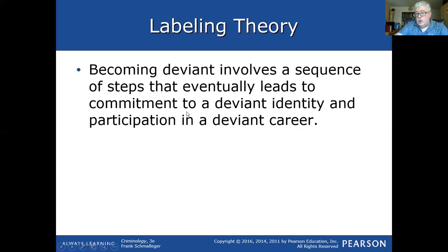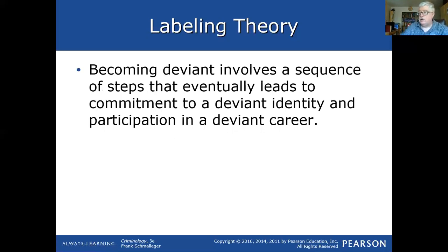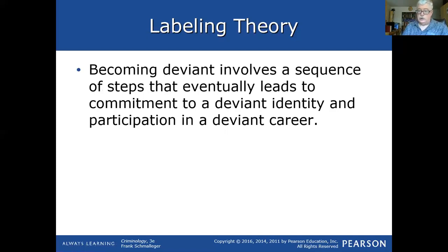Becoming deviant is a series of steps that eventually leads to commitment to a deviant identity and participation in a criminal career. Is it really because of the label, or is it because of the continuous steps? Is the label part of it? It's possible that someone made a mistake, made a bad decision, but because they were labeled and went to prison, their feeling about themselves — their self-worth — makes them continue.